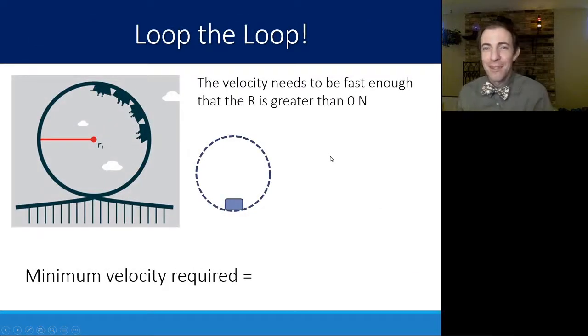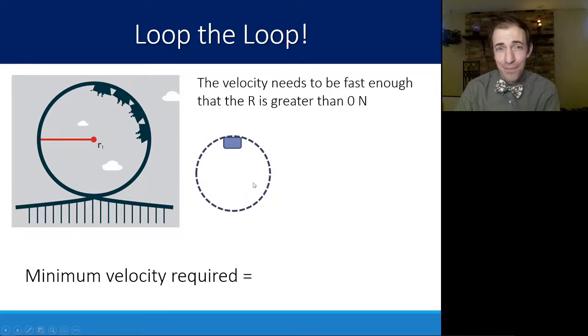One final example that you should be familiar with just in case is the loop-de-loop. So in both of these first examples with the roller coaster, the track was underneath the roller coaster car. So we knew that R was pointing up, but R doesn't have to point up. It just has to push on the object perpendicular to itself. So if this object is on a loop-de-loop going to the top, centripetal force would have to point down, but R would also point down because it is pushing on the object perpendicular to the track. Now, for the velocity to make it all the way around a loop-de-loop, R has to be greater than zero, because if R is less than zero, then it's no longer pushing enough and it's going to lose contact with the track.